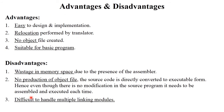The disadvantages of the compile and go loader are: there is wastage of memory space because the assembler is placed into main memory, and loaders require less memory than assemblers; no object file is produced, so the source code is directly converted into executable format with no way to modify it; the program needs to be assembled and executed each time; and it is difficult to handle multiple linking modules.